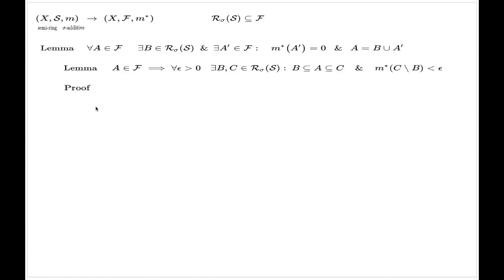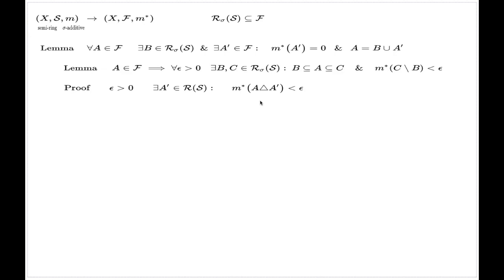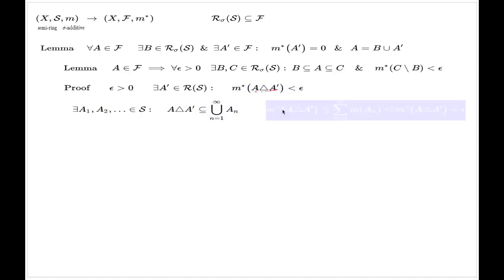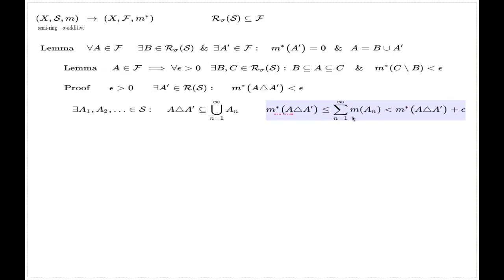First we prove this smaller lemma. We fix an epsilon greater than zero and use the definition of Lebesgue measurability, which says that there must be a set A' from the minimal ring enveloping S, such that M* of the symmetric difference is less than epsilon. I also need to recall the definition of the external measure: we have a sequence of elements of the initial semi-ring that produces a covering for the symmetric difference, such that the external measure of this symmetric difference is controlled by the sum of individual measures of the covering, with an extra epsilon — this is the definition of the infimum in the formula defining external measure. The external measure itself is less than epsilon, so the right-hand side is less than 2 epsilon.